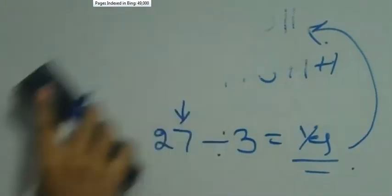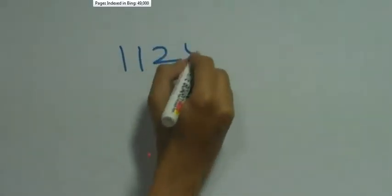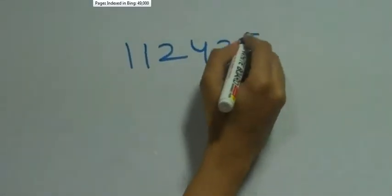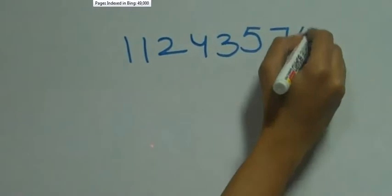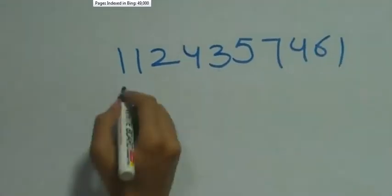Easy? Good. Let's look at another bigger example. Let's take 1, 1, 2, 4, 3, 5, 7, 4, 6, 1.